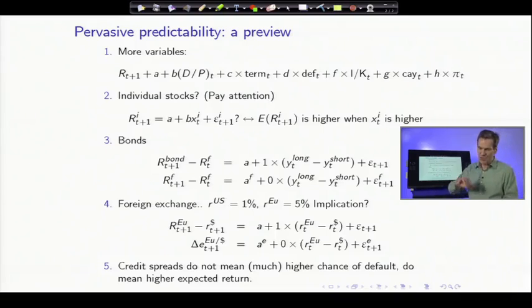Some measures of the term structure, the forward spread, turn out to be entirely related to a risk premium and not at all to forecasting where interest rates are going.